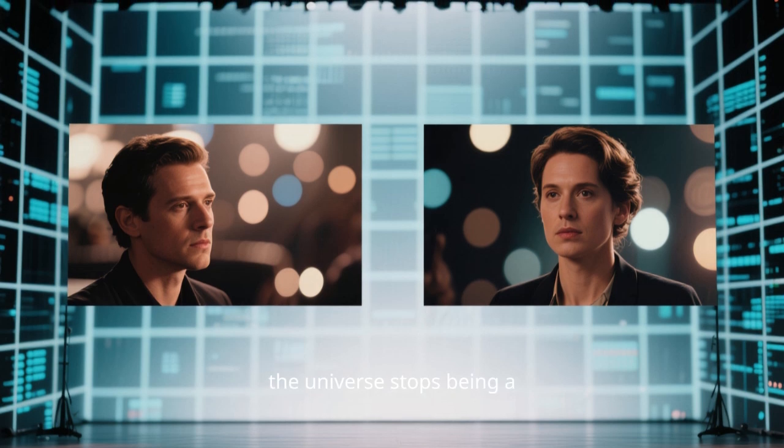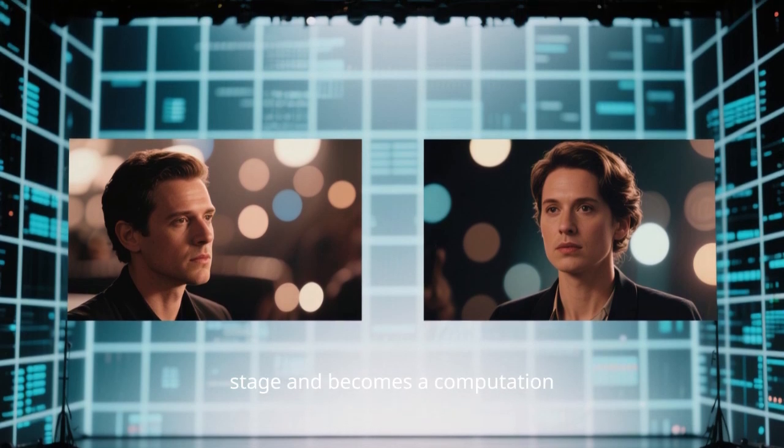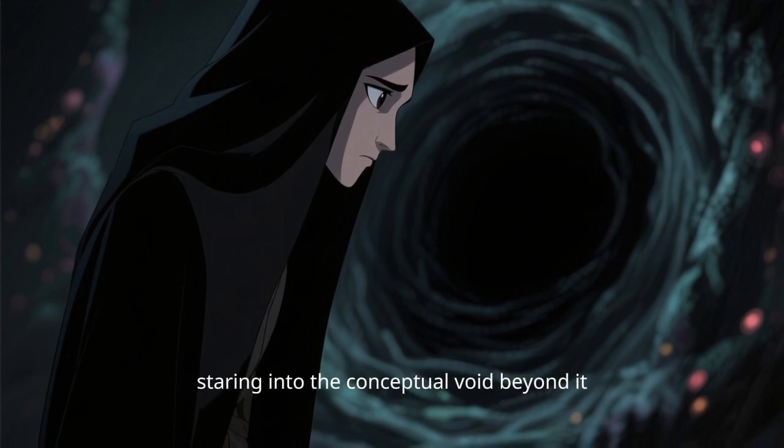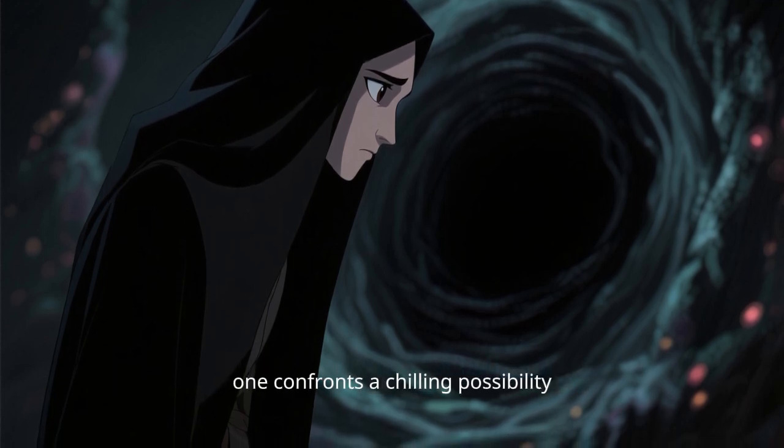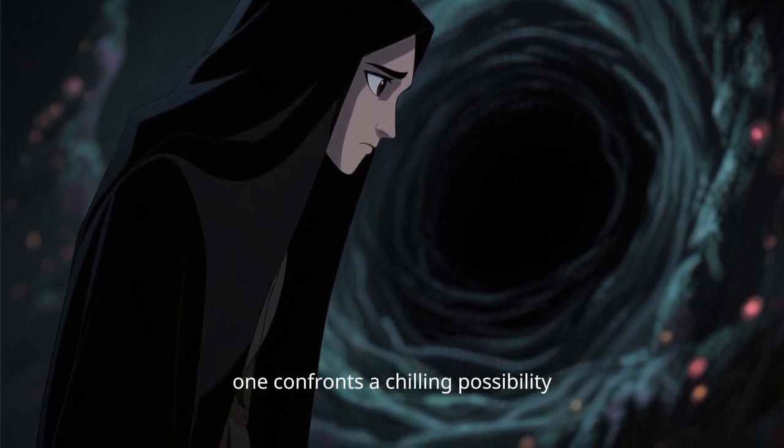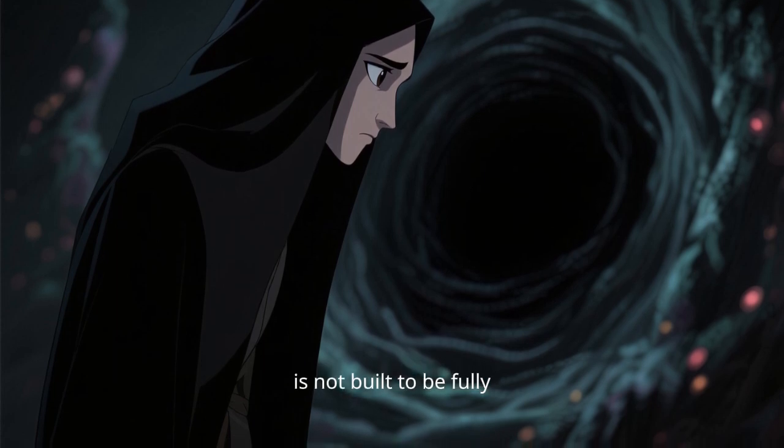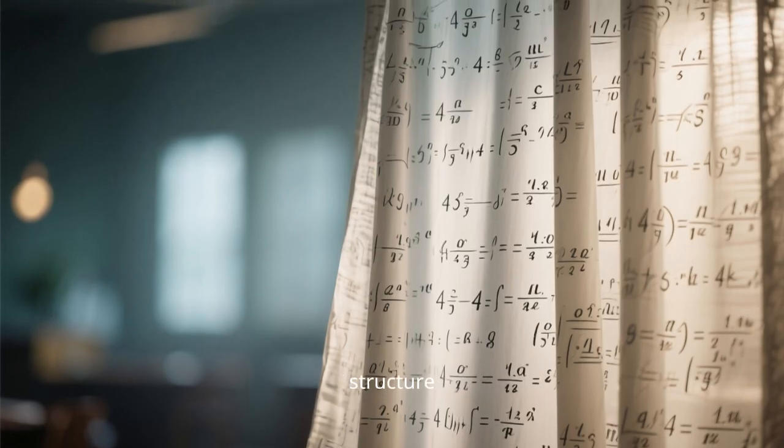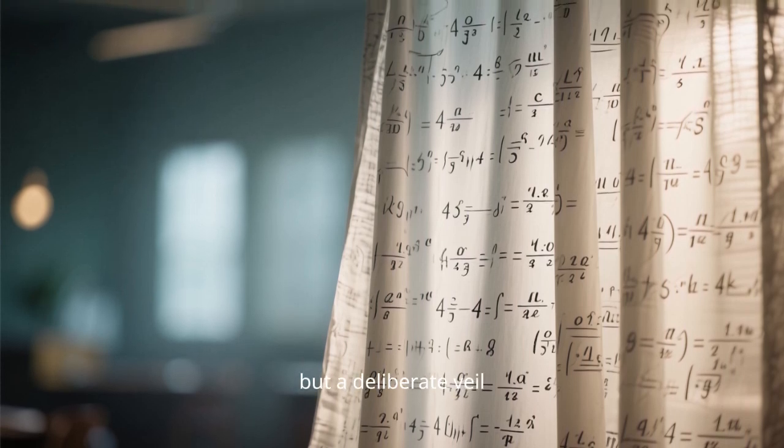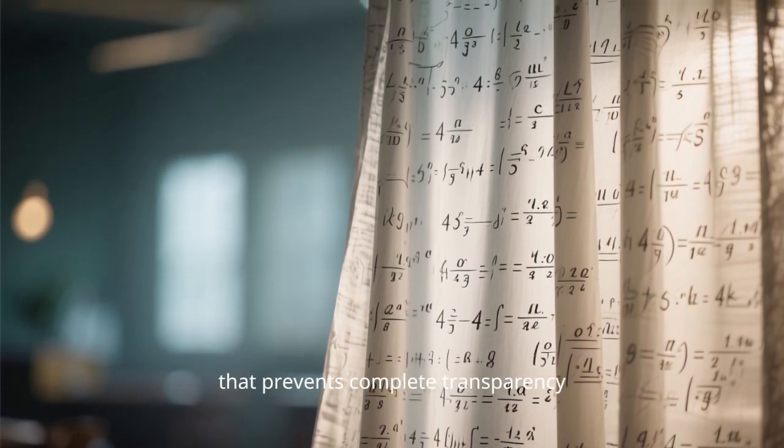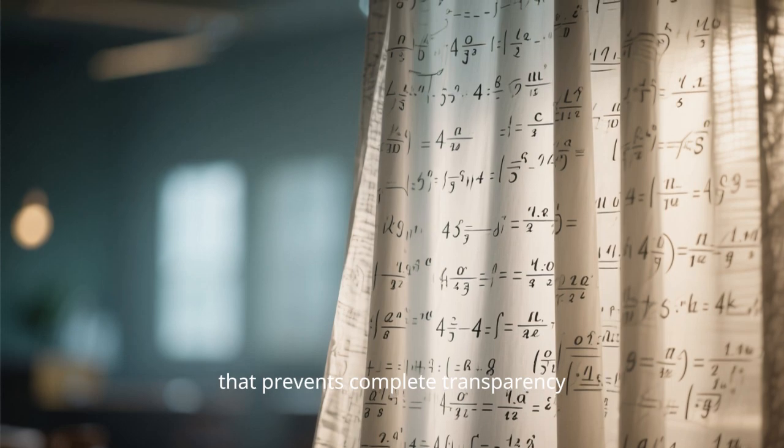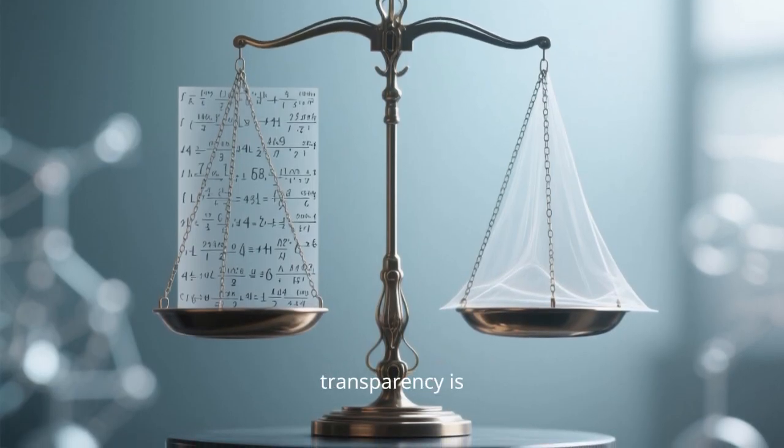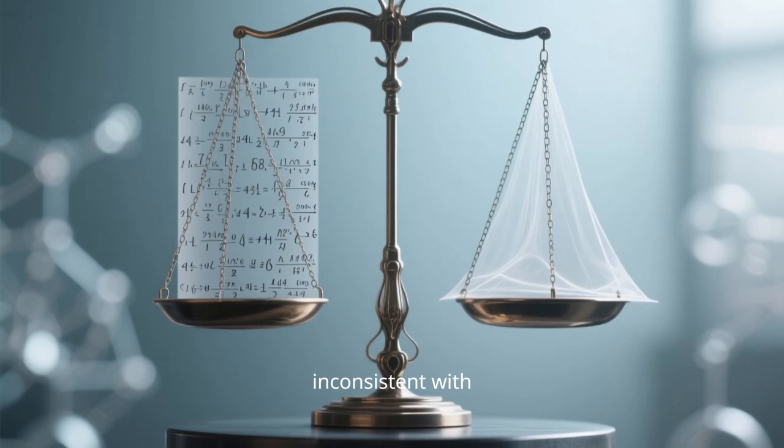It is the line where the universe stops being a stage and becomes a computation. And standing at that line, staring into the conceptual void beyond it, one confronts a chilling possibility. Maybe the universe is not built to be fully intelligible. Maybe built into the laws of nature is not just structure, but a deliberate veil, a mathematical censorship that prevents complete transparency. Not because nature is malicious, but because total transparency is mathematically inconsistent with existence.